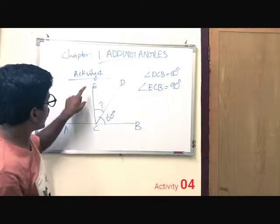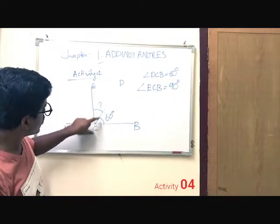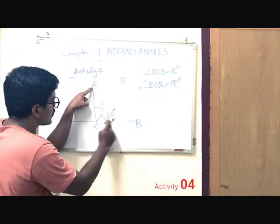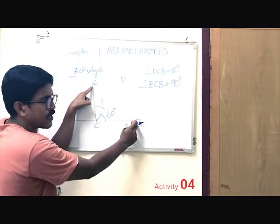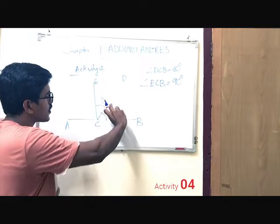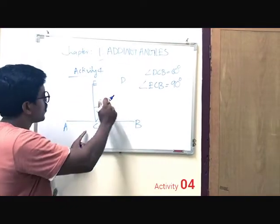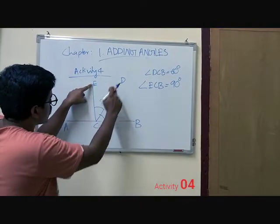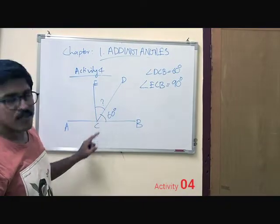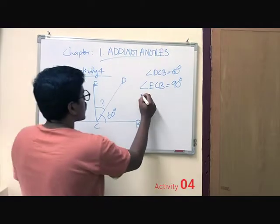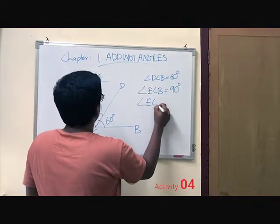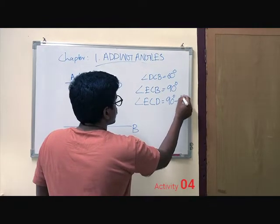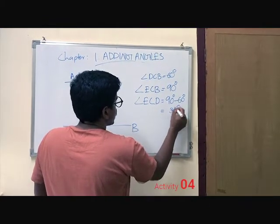Now we have to find out the angle measurement of angle E, C, V. How we can find out? The entire angle E, C, V is 90 degrees and this portion is 60 degrees. So if we subtract 60 from 90, we get angle E, C, V equal to 90 minus 60 degrees, that is equal to 30 degrees.